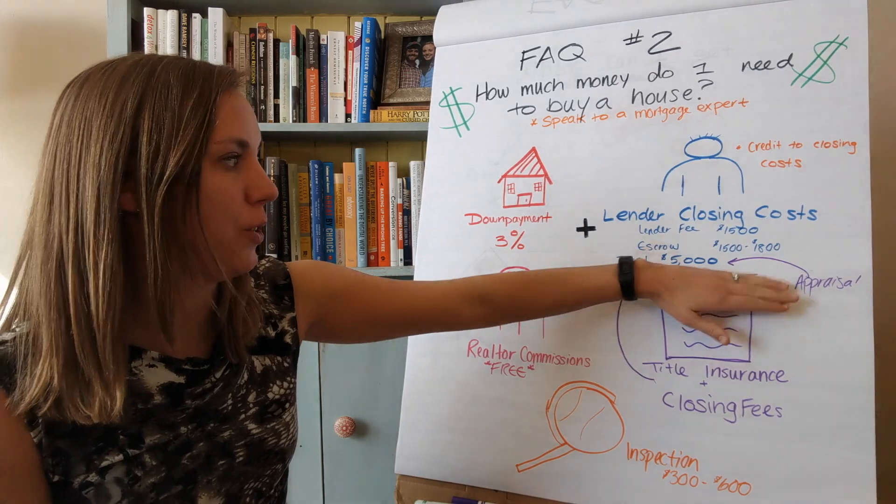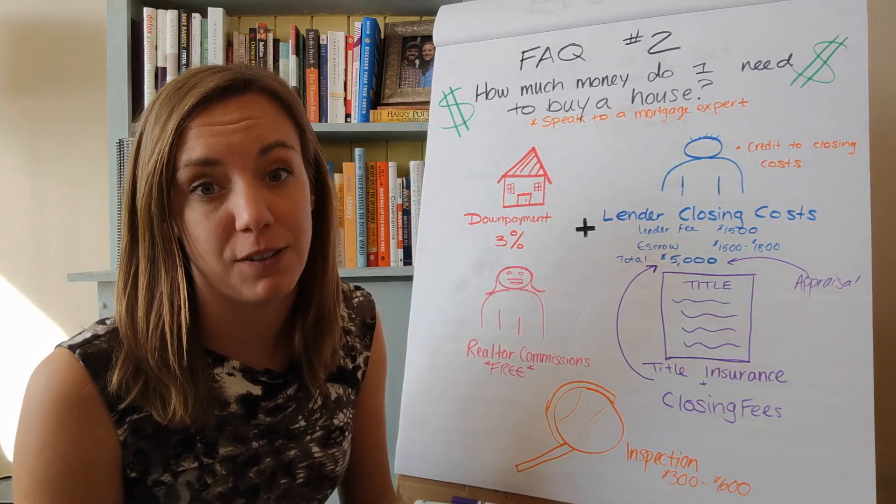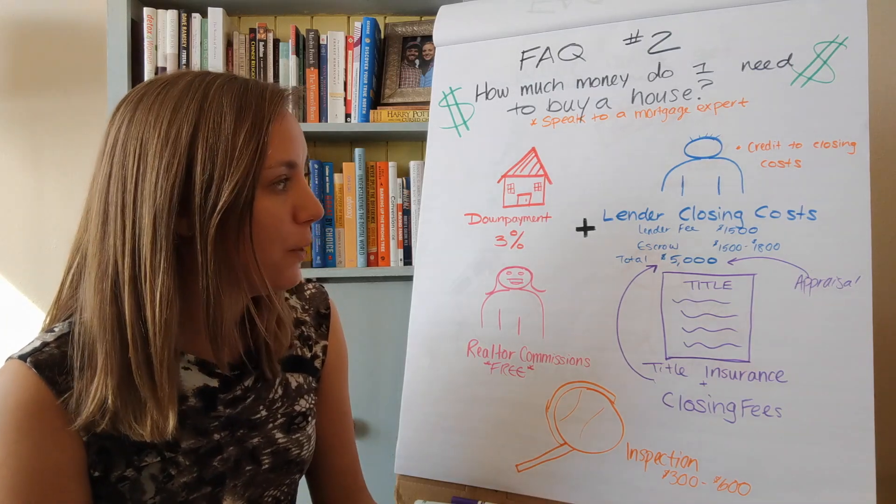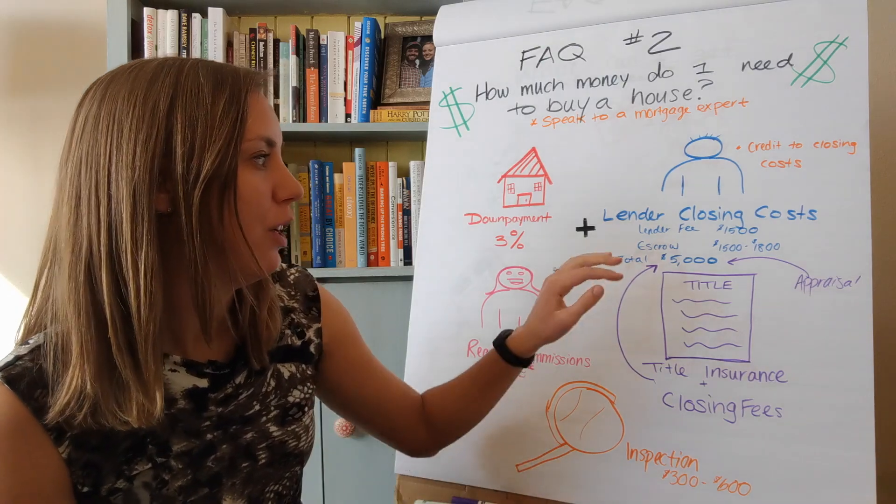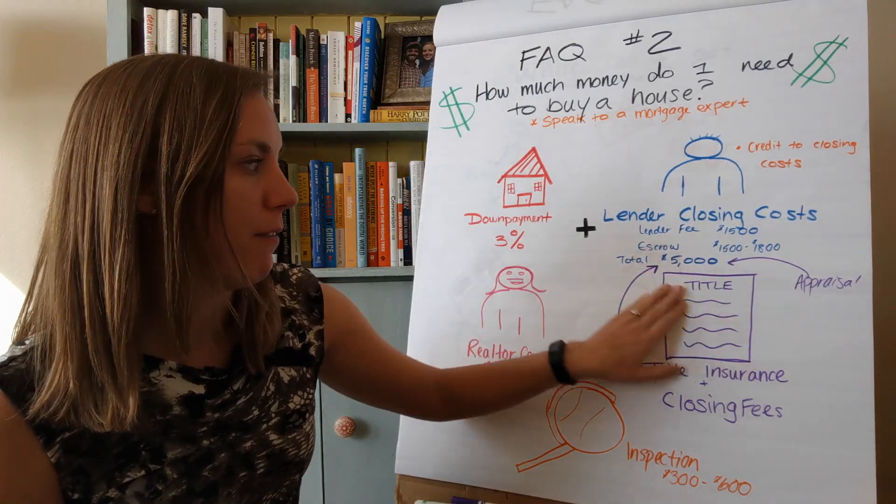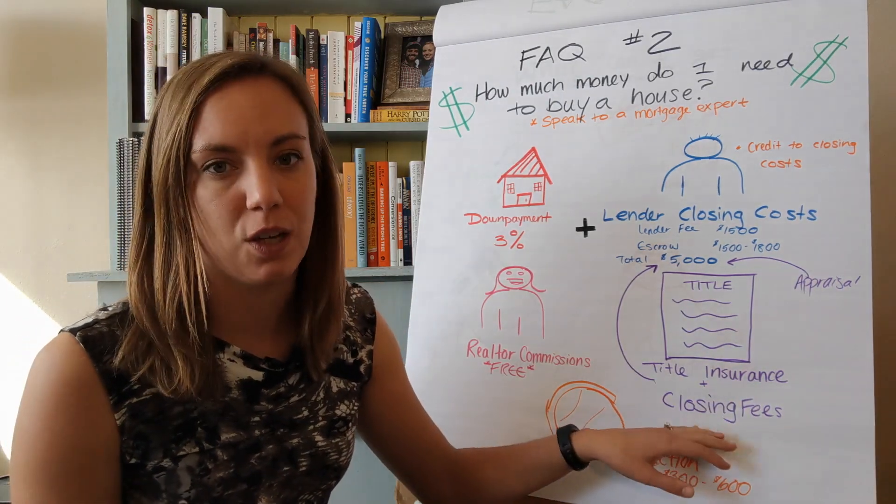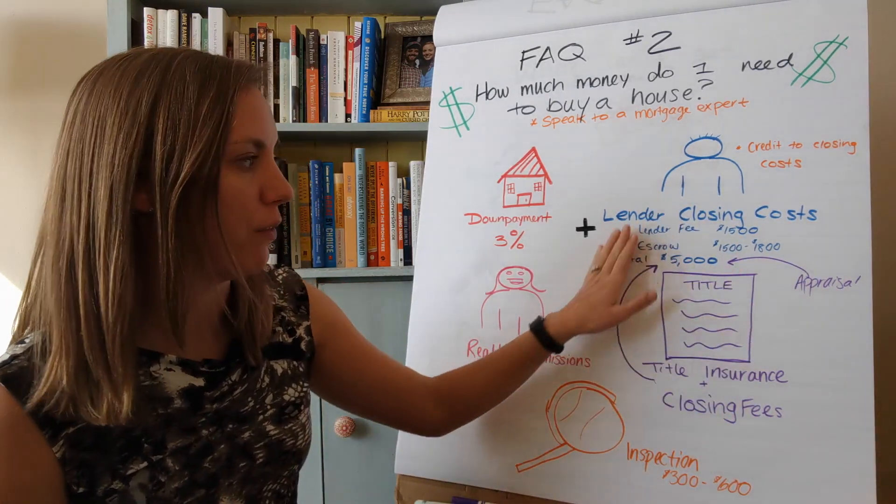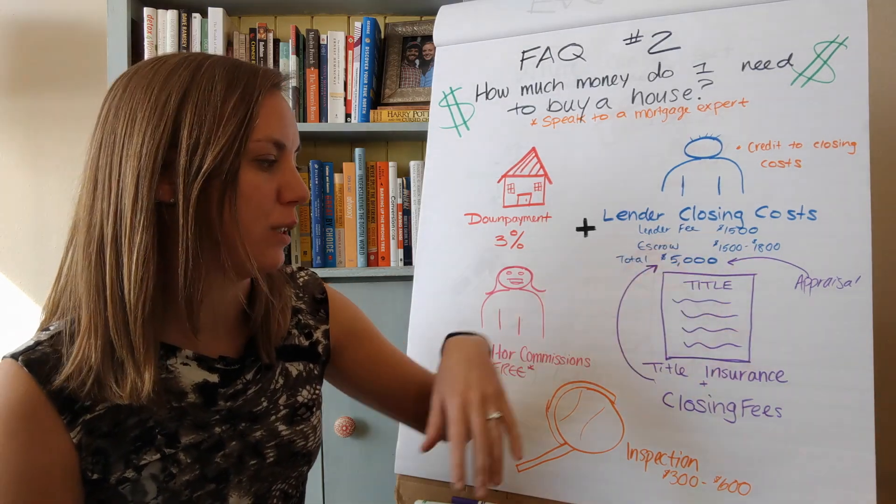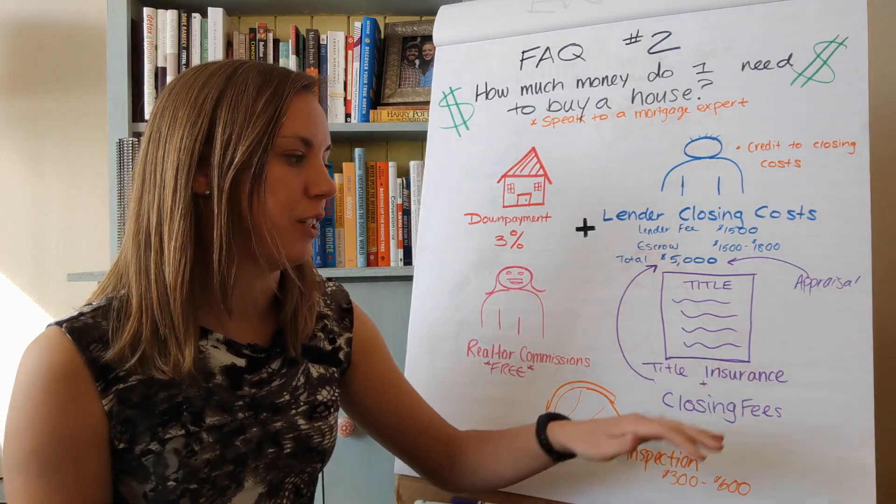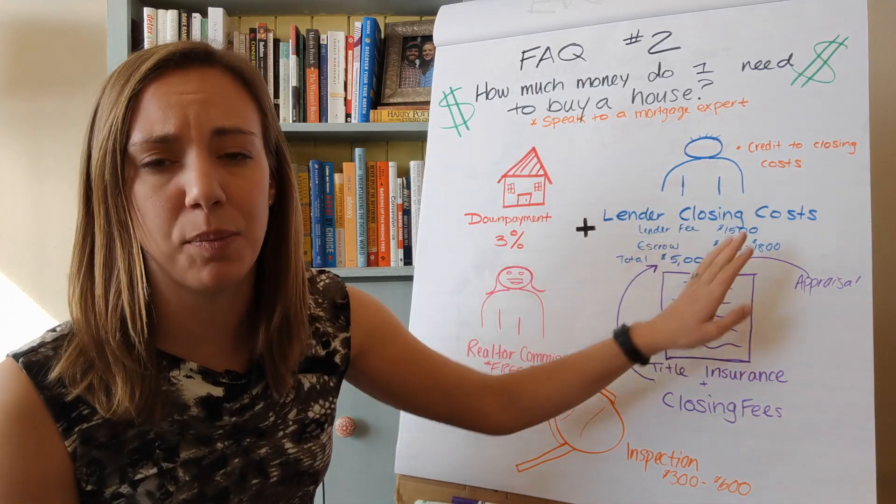Plus you have your lender closing costs. Unless you have cash to purchase a home, you're going to need to finance it, and with that financing comes closing costs. Those are roughly going to be about $5,000 and will include your appraisal, title insurance, lender fees, what they put into escrow, and all your closing fees.